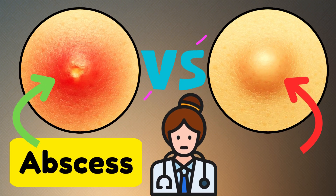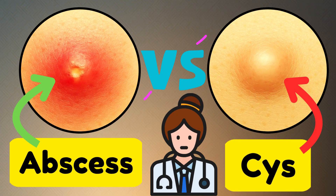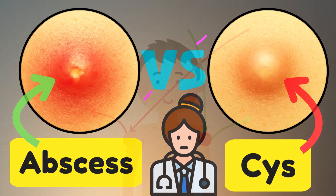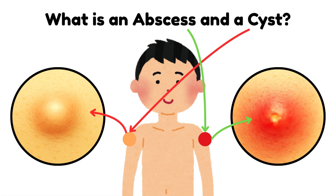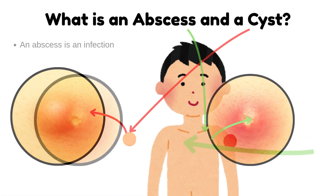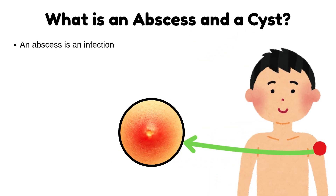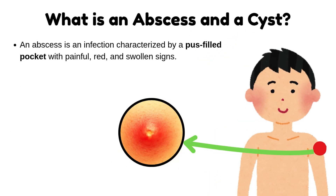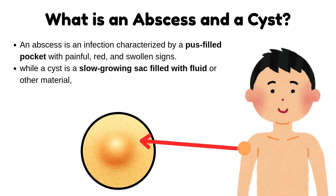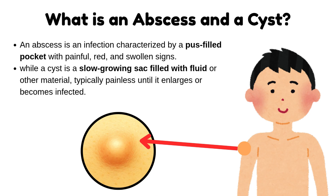Abscess versus cyst. What is an abscess and a cyst? An abscess is an infection characterized by a pus-filled pocket with painful, red, and swollen signs. While a cyst is a slow-growing sack filled with fluid or other material, typically painless until it enlarges or becomes infected.